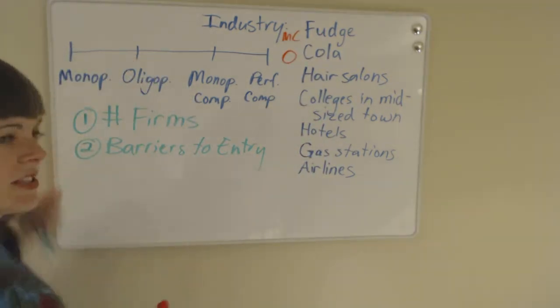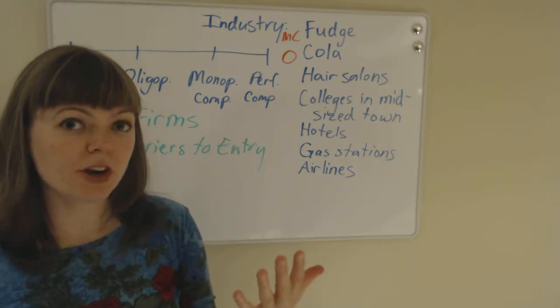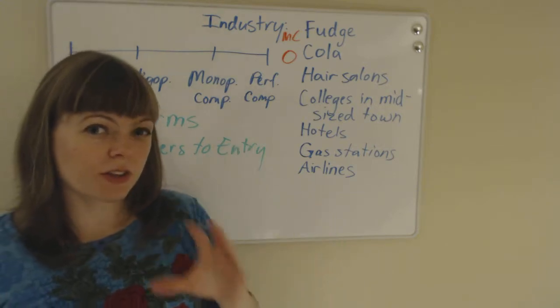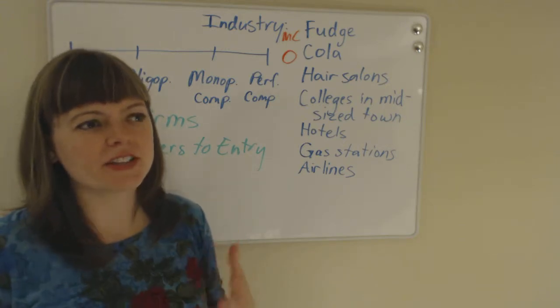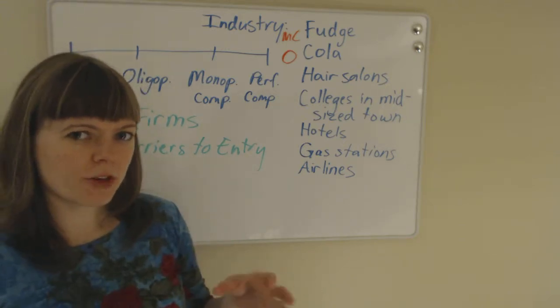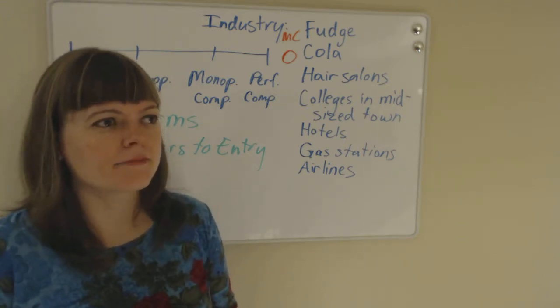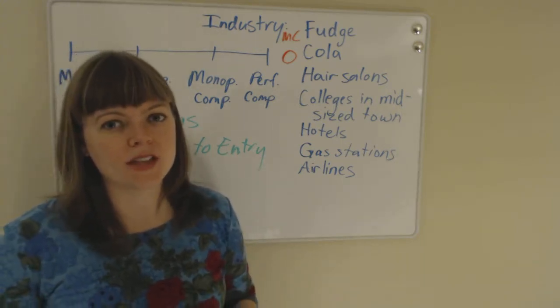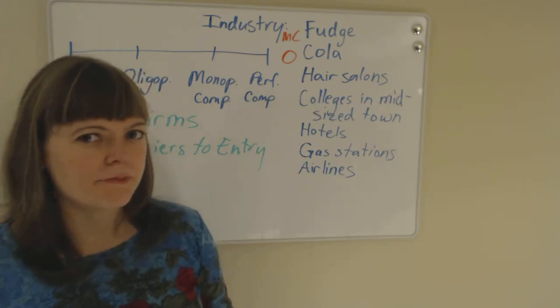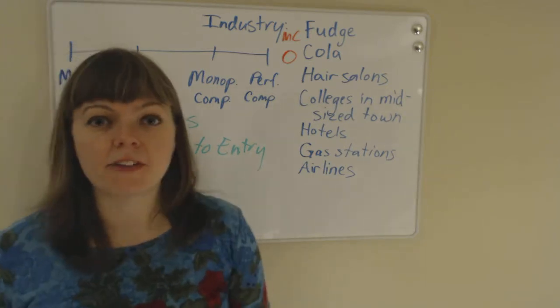And these are really the main two steps you're going to go through, is how many firms are there, and if there's only a few firms, what are the barriers to entry? Because sometimes you have industries where there might be a few big firms. McDonald's and Hardee's are definitely big firms. But there's also a lot of competitors.